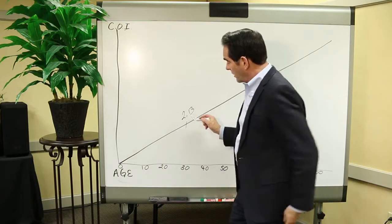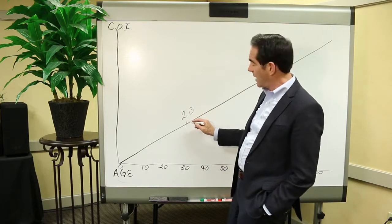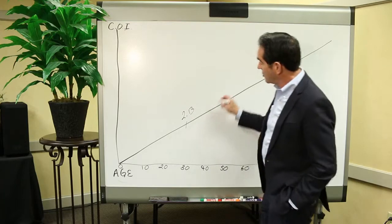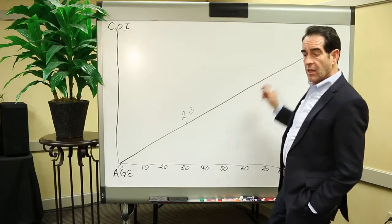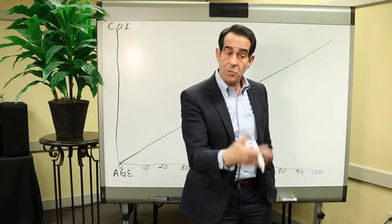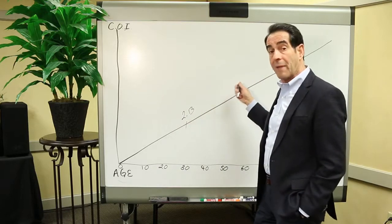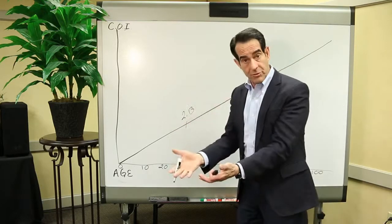Term insurance, the insurance company calculates, based upon the mortality table, how many deaths per 1,000. As you get older, you have to donate more money to the hat. So pure term insurance goes up in price every year because more and more people are going to be passing away per 1,000.